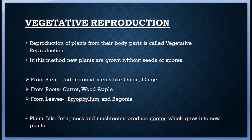Next is vegetative reproduction. Reproduction of plants from their body parts is called vegetative reproduction. In this method, new plants are grown without seeds or spores. Many fruit trees are grown by these methods, and the fruits produced are seedless and smaller in size.